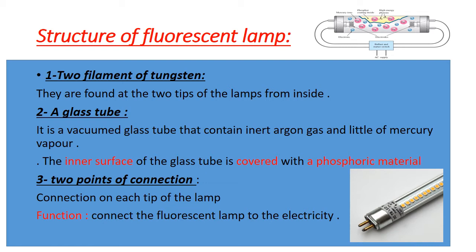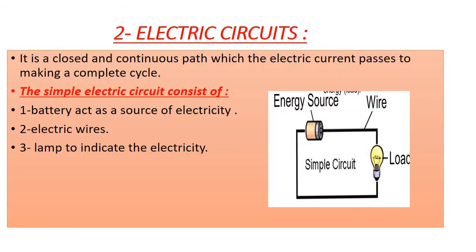The two points connect the fluorescent lamp to the electricity. Now, the electric circuit. An electric circuit is a closed and continuous path through which the electric current passes to make a complete cycle or complete circuit. The simple electric circuit consists of a battery, which acts as a source of electricity, electric wires, and a lamp to indicate the electricity.